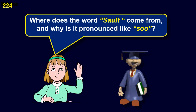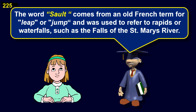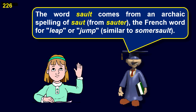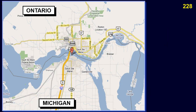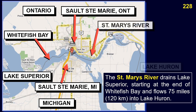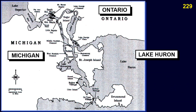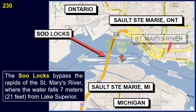Where does the word 'Sault' come from and why is it pronounced like 'Soo'? The word comes from an old French term for leap or jump, used to refer to rapids or waterfalls, such as the falls of the St. Mary's River. It comes from an archaic spelling of 'salt' from 'sauter,' the French word for leap or jump, similar to 'somersault.' The word 'Sault' in French is pronounced like the English word 'Soo.' The St. Mary's River drains Lake Superior, starting at the end of Whitefish Bay and flowing 75 miles into Lake Huron. It is the international border between Michigan and Ontario for its entire length. The Soo Locks bypass the rapids where the water falls 7 meters (21 feet) from Lake Superior.